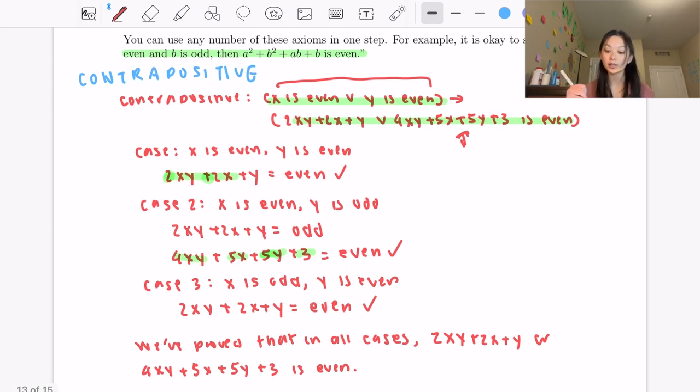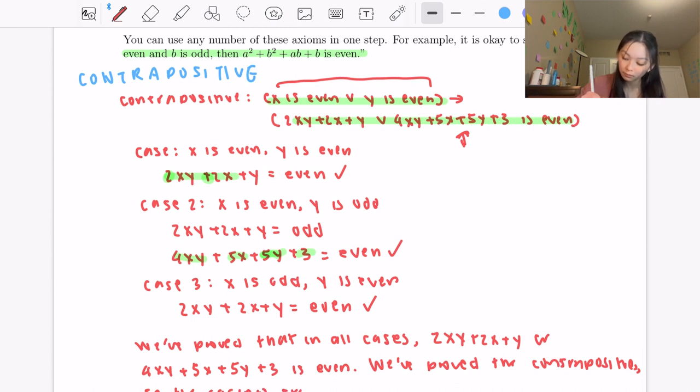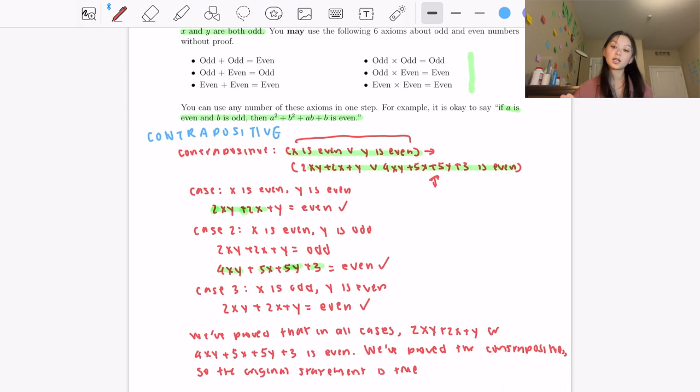So that's going to be the contrapositive, and since we've proved the contrapositive, we know that the original statement must also be true. So that concludes our proof where we are using both contrapositive and proof by cases inside of this proof.